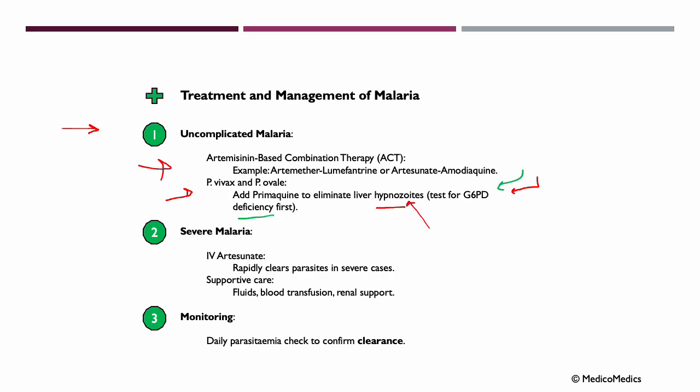When given primaquine, individuals with G6PD deficiency can develop acute hemolytic anemia, where their red blood cells will break down rapidly. Therefore, testing for glucose-6-phosphate dehydrogenase deficiency before prescribing primaquine is crucial to avoid this potentially severe side effect.